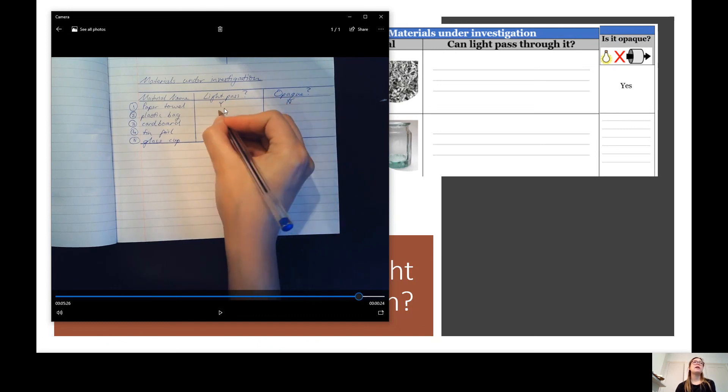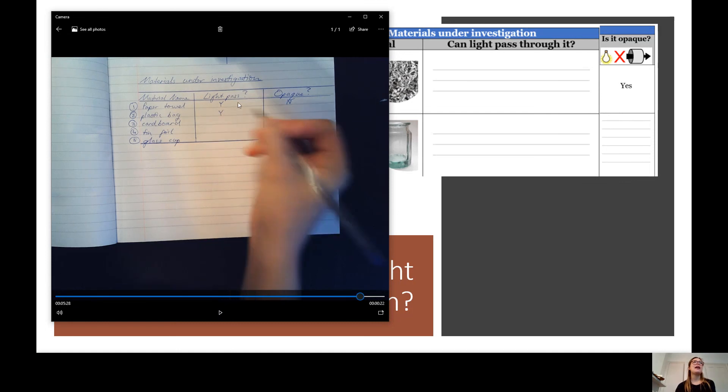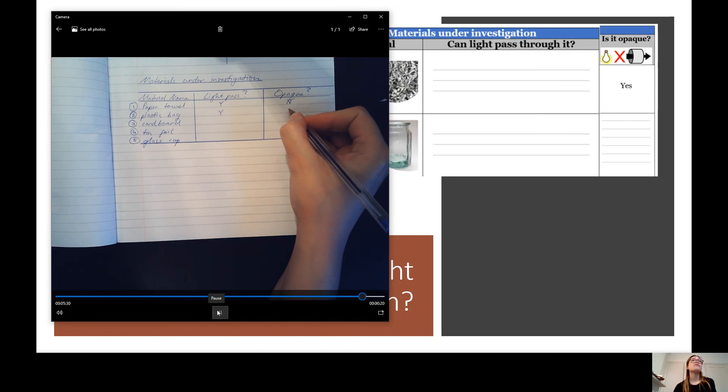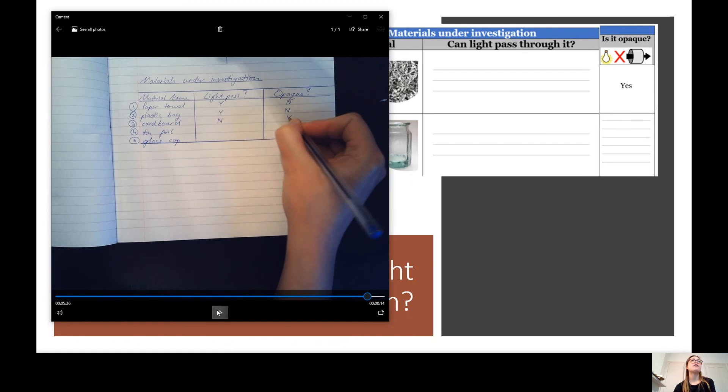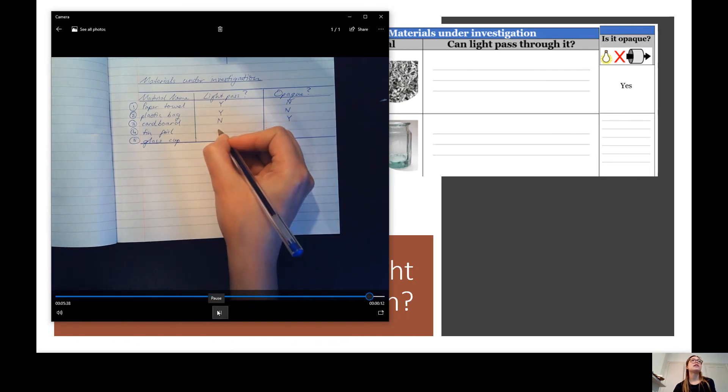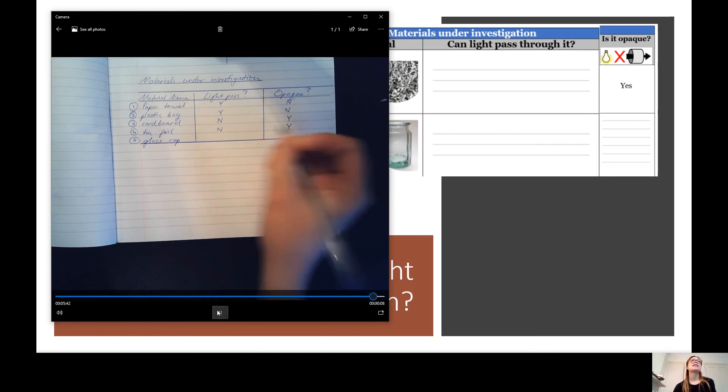And then write down your results. So paper towel. We could remember that light did pass through it. So it's not opaque. So we did a Y there for a yes and an N there for a no. Plastic bag. Did light pass through it? Yes. Is it therefore opaque? No. Cardboard. Light did not pass through it and therefore it's opaque. Tin foil. Did light pass through it? No. Is it opaque? Yes. Glass cup. Did light pass through it? Yes. Is it opaque? No.